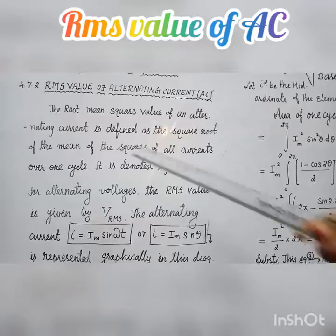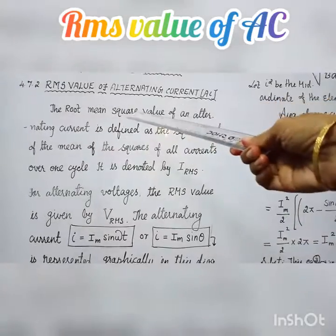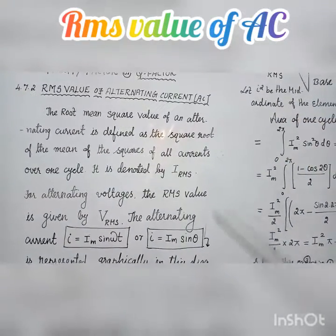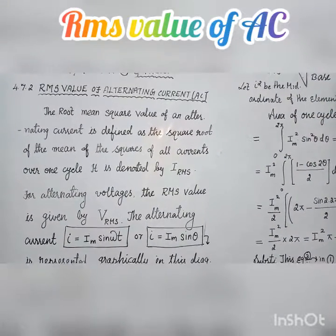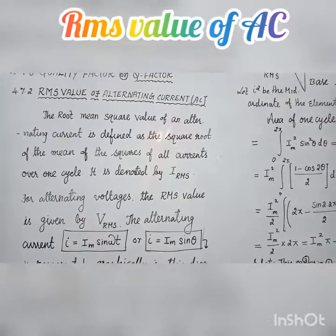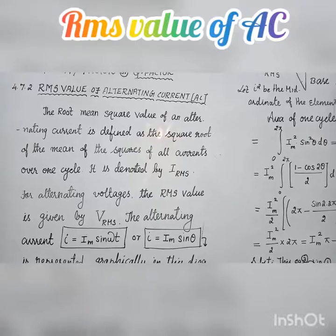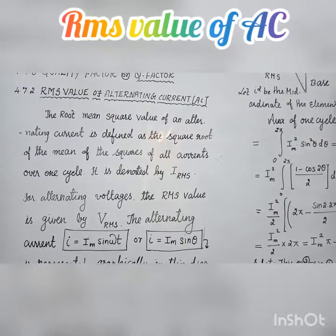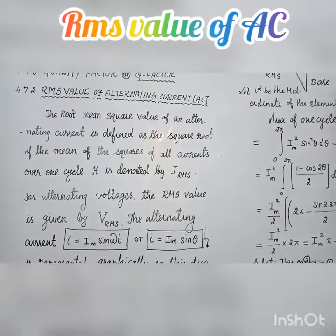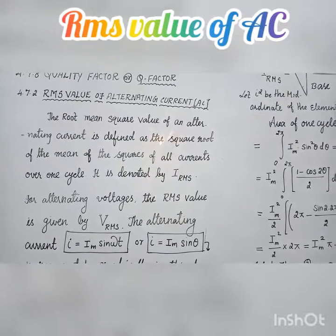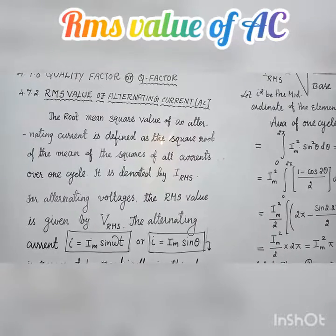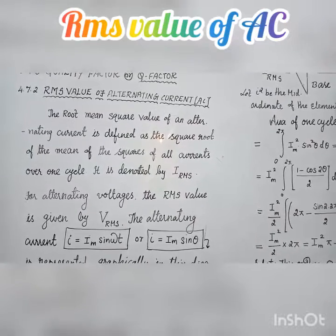Next topic: RMS values of alternating current (AC). The term RMS refers to time-varying sinusoidal currents and voltages and is not used in the DC (direct current) system.